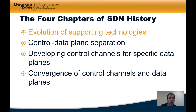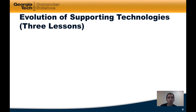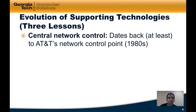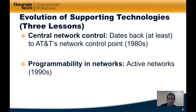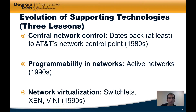Let's first start by talking about the evolution of supporting technologies. We'll break this up into three different lessons. First, we'll talk about the origins of central network control, which dates back at least to the early 1980s in the form of AT&T's network control point, which is still in use today. Next, we'll talk about the history of programmability in networks, which can be traced back to active networks in the 1990s. Then we'll talk about network virtualization, which some have described as the killer app for SDN, and which also has its roots in various technologies in the 1990s.